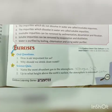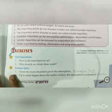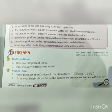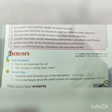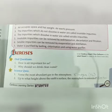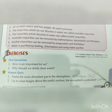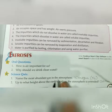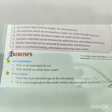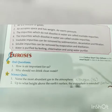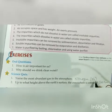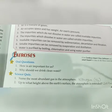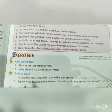Page number 99, question number B: Science Quiz. Name the most abundant gas in the atmosphere — उस gas का नाम बताना है जो atmosphere में सबसे ज़्यादा present है। The answer is Nitrogen, symbol N2, which is 78% present in the atmosphere.